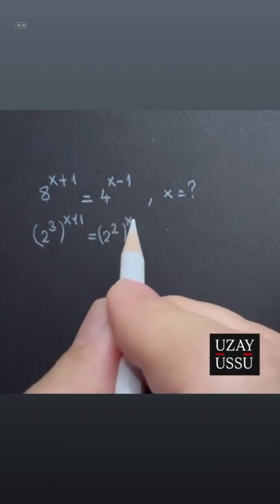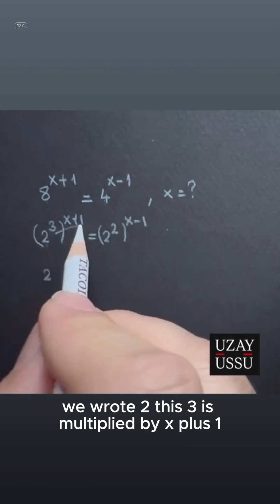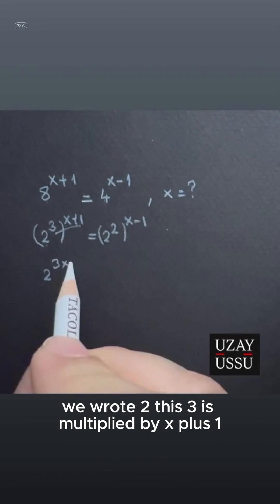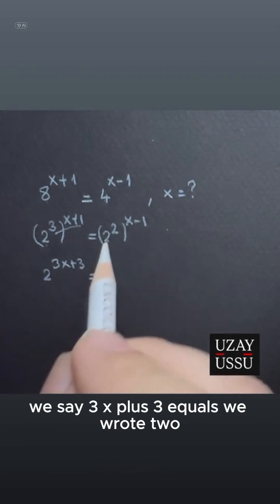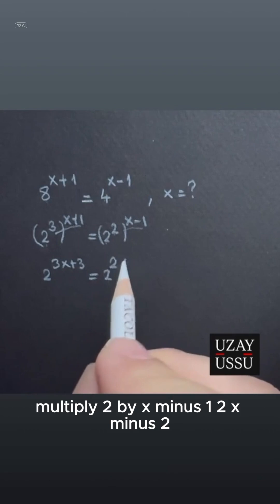We wrote the x minus 1 on top as it is. We wrote 2. This 3 is multiplied by x plus 1. We say 3x plus 3 equals, we wrote 2 multiplied by x minus 1, 2x minus 2.